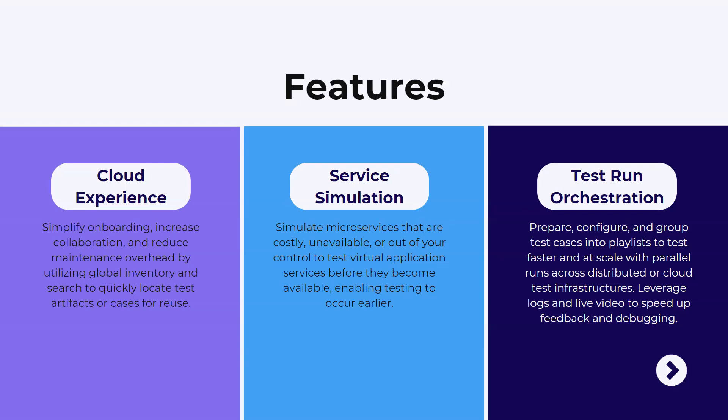The final feature is test run orchestration, which lets you prepare, configure, and group test cases into playlists for faster, scalable parallel runs across distributed or cloud environments. Extensive logs, videos, and screenshots are available to speed up feedback and debugging — so if there are any errors, you can resolve them faster using these resources in Tricentis Test Automation.